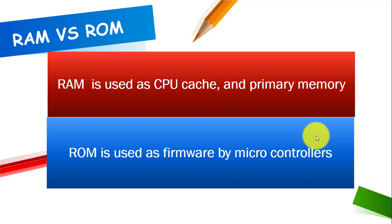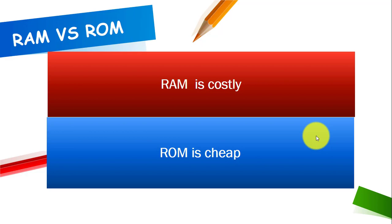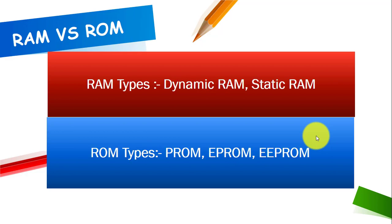RAM is used as CPU cache and the primary memory, whereas ROM is used as firmware by microprocessors. If you do not have any idea about cache memory, you can watch my detailed video on cache memory on my YouTube channel and in the description of this video. RAM is costly whereas ROM is cheap as compared to RAM.